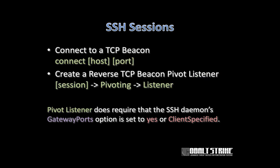Something really cool: you can do cross-session pivoting. SSH sessions can control TCP beacons — use 'connect [host] [port]' to connect to a TCP beacon that is waiting for a connection. You can also create a reverse TCP beacon pivot listener by right-clicking the session and going to Pivoting, Listener. This option does not handle GatewayPorts, so if that option is not set to 'yes' or 'clientspecified', the pivot listener will be bound to localhost. But in situations where that's not a problem, you can turn a compromised Unix target into a redirector for reverse TCP beacon sessions.